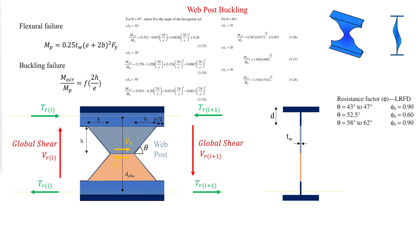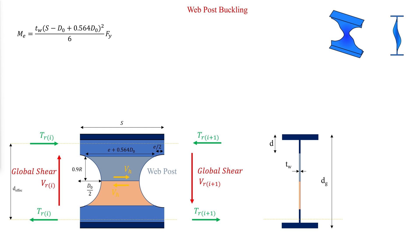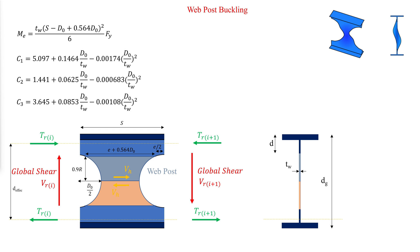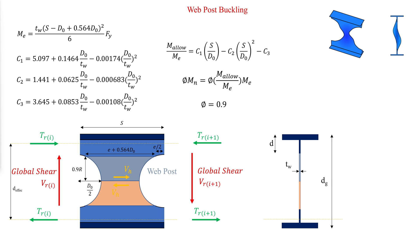The equations are only applicable for E over tw between 10 and 30, and 2H over E less than or equal to 8. It is typically most efficient to maintain an angle theta between 58 and 62 degrees. For cellular beams, a similar set of equations was developed through destructive testing. There are three values C1, C2, and C3, which are functions of web post properties used to calculate the buckling capacity of the web post as a function of the web post elastic capacity at a critical section 0.9R.